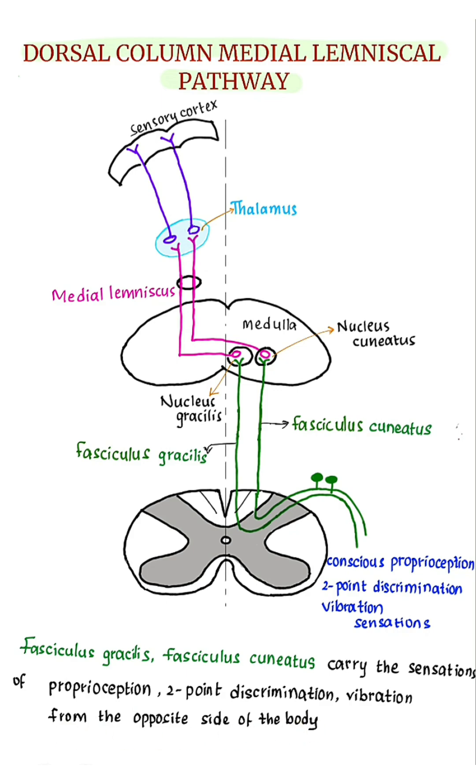Hence, the fibers have to cross the midline. This crossing over occurs within the lower medulla. It is the second-order neurons that cross the midline.